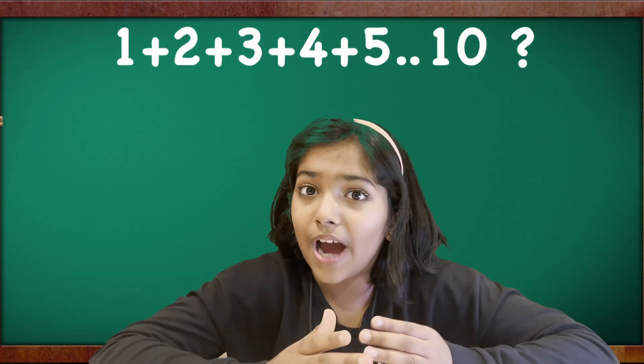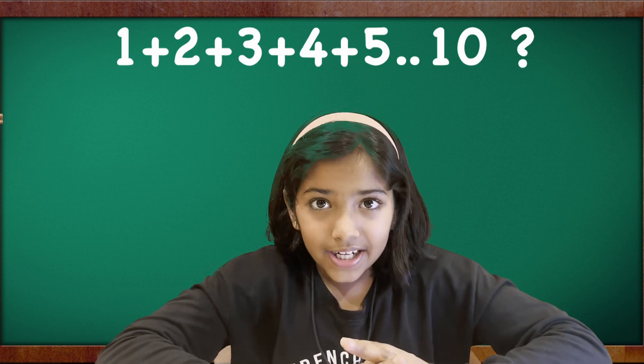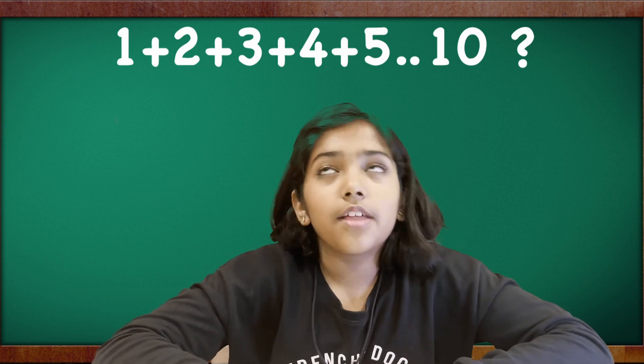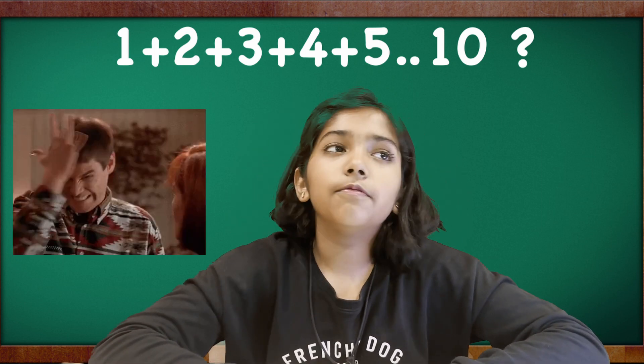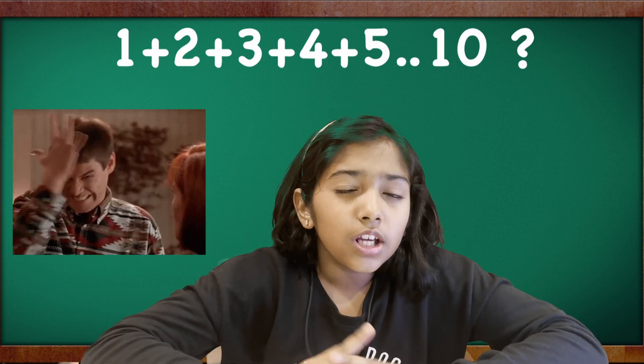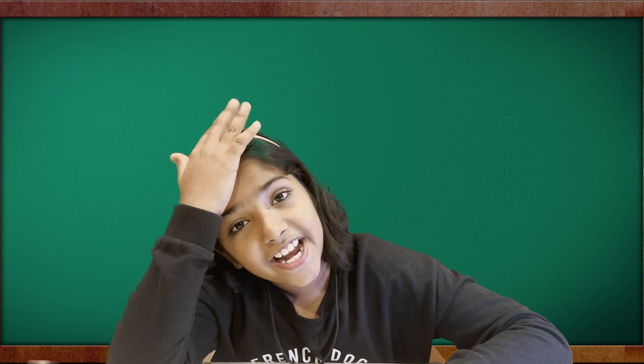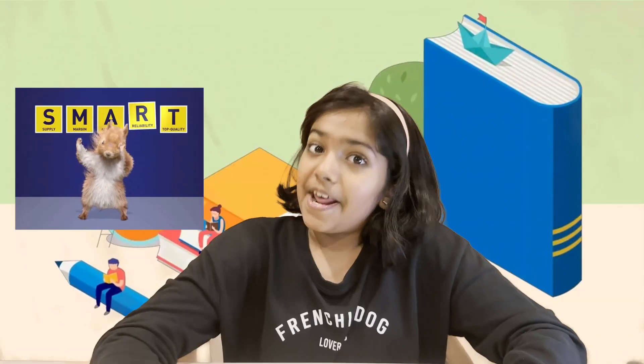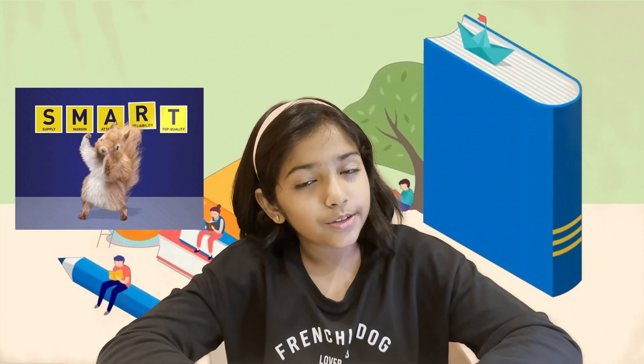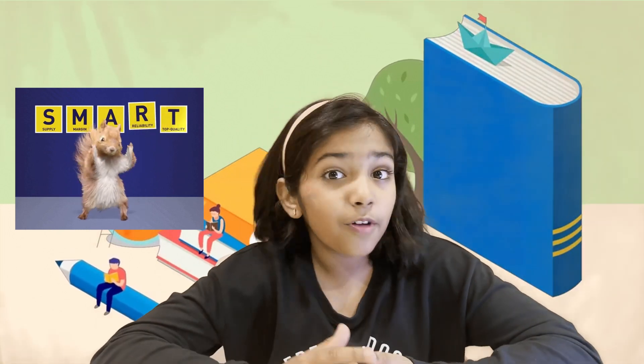The standard way is to add 1 to 2, then 3, then 4. It's way too complicated. But now let me introduce the smart way.